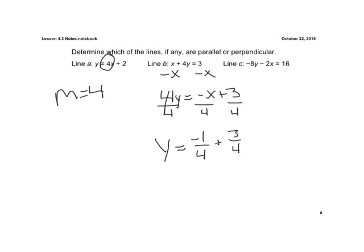Okay, and let's move our line C. Let's make that into slope-intercept form as well. So let's go ahead and add our 2X. So we're left with a negative. Add it on both sides. Negative 8Y equals 2X plus 16.